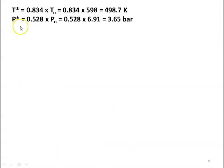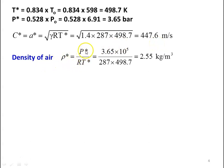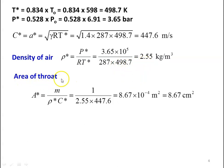From these values, the properties at the throat: T* equal to 0.834 into T0 equal to 0.834 into 598 equal to 498.7 Kelvin. P* equal to 0.528 into P0, which is 0.528 into 6.91 equal to 3.65 bar. Velocity at the throat: C* equal to square root of gamma R T*, which is square root of 1.4 into 287 into 498.7 equal to 447.6 meters per second. Density at throat: rho* equal to P* by R T*, which is 3.65 into 10^5 divided by 287 into 498.7 equal to 2.55 kilograms per meter cube. Area of the throat: A* equal to mass flow rate divided by rho* into C*, which is 1 divided by 2.55 into 447.6 equal to 8.67 into 10^-4 meter square, which is 8.67 centimeter square.